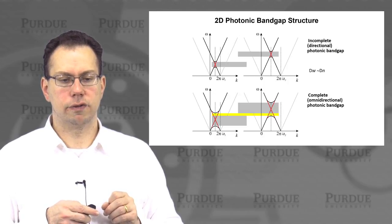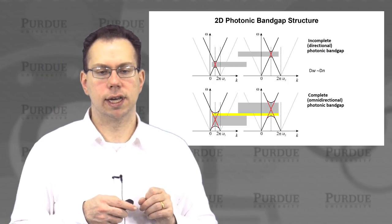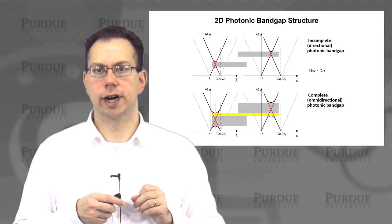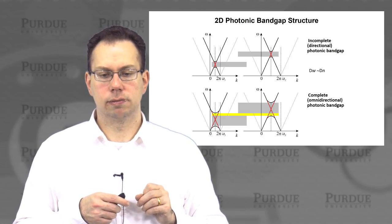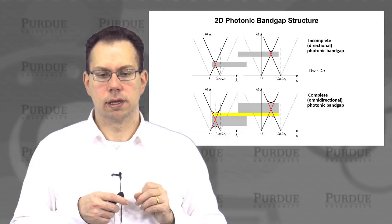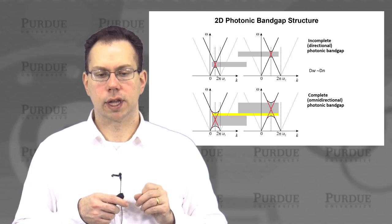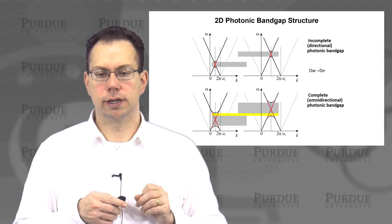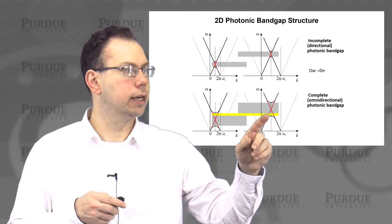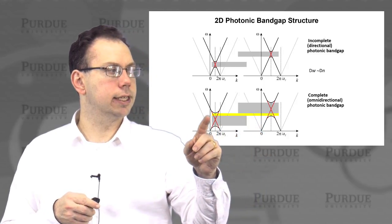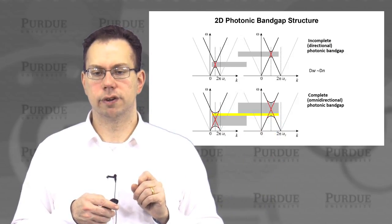So basically, if the index contrast is large enough in this 2D photonic band gap, then you get what's called a complete or omnidirectional band gap, where regardless of the specific direction, then you get a dispersion relation that overlaps with other angles. So that's basically what this graph is showing here. So this yellow region means that regardless of incident angle, you still have like the reflection over that range of frequencies.